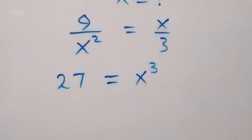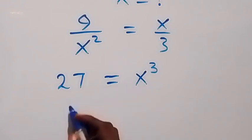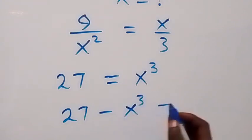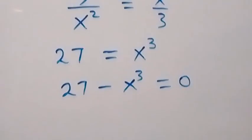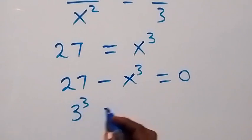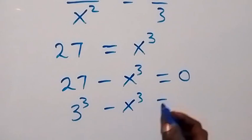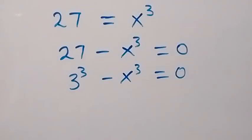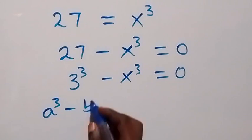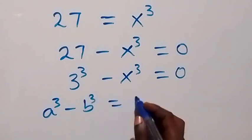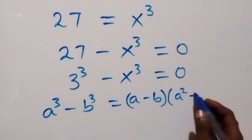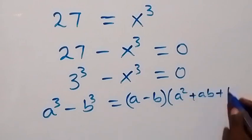Then from here we can bring x raised to power 3 to this side, then this becomes 27 minus x raised to power 3 equals 0. Then we can equally write 27 as 3 raised to power 3, then minus x raised to power 3 equals 0. And from what we have here, this follows from the identity a cubed minus b cubed equals a minus b, times bracket a squared plus ab plus b squared.